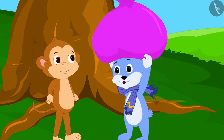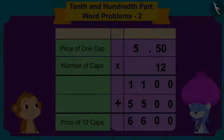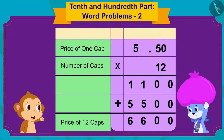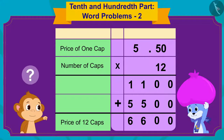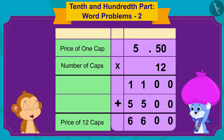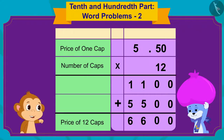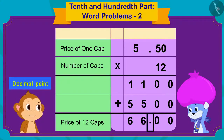Bunny excitedly asked: Then will I earn 6,600 rupees? No, Bunny. Now, we have to see how many digits are there after the decimal point in the numbers being multiplied. Can you tell me how many digits are there after the decimal point in 5 rupees and 50 paise? Two digits, Bunny quickly replied. Absolutely right. So, we will write the decimal point in the answer in such a way so that there are only two digits after the decimal point, and then we will get our answer.